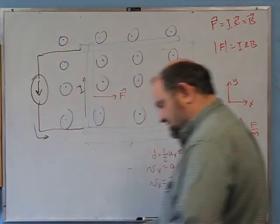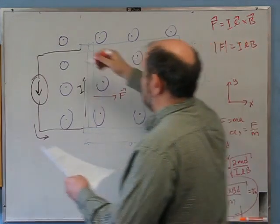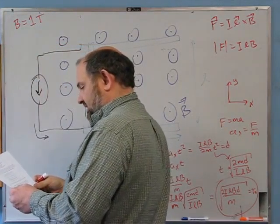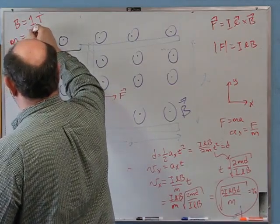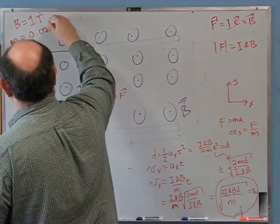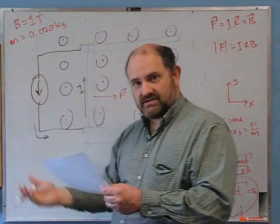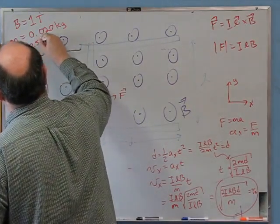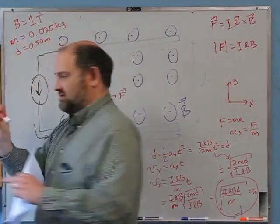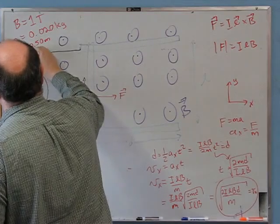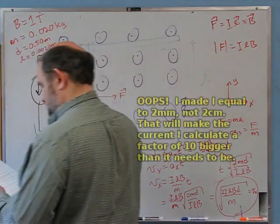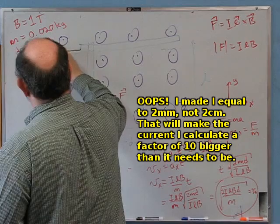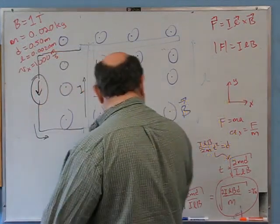Given numbers: B = 1 tesla, slug mass m = 20 grams, barrel length D = 0.50 meters, barrel width L = 0.0020 meters. We want the slug moving at Vx = 1000 meters per second when it exits. What current must we run through the circuit?